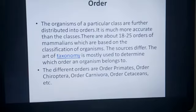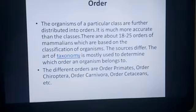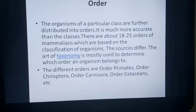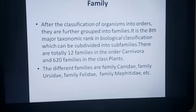Next comes order. The organisms of a particular class are further distributed into orders. It is much more accurate than classes. There are about 18 to 25 orders in a class. For example, in class Mammalia the orders include Primates, Chiroptera, and Carnivora — various kinds of orders present in class Mammalia.